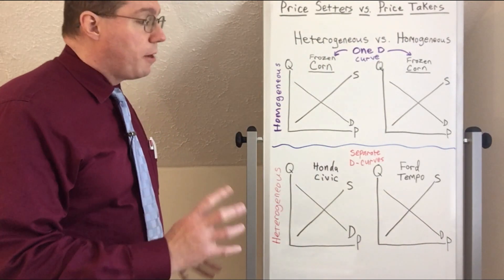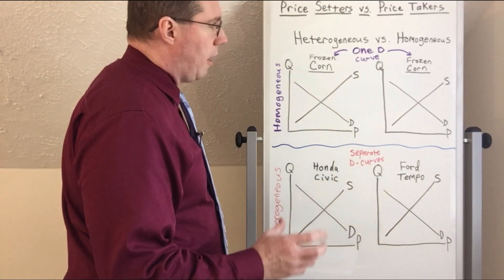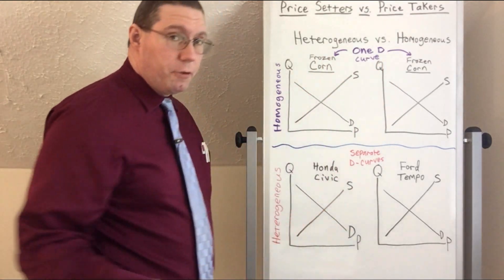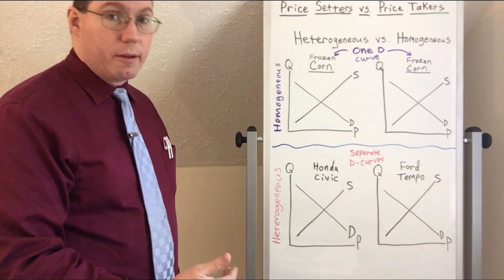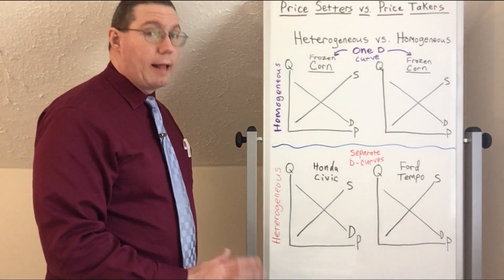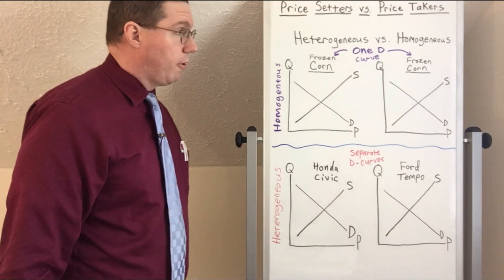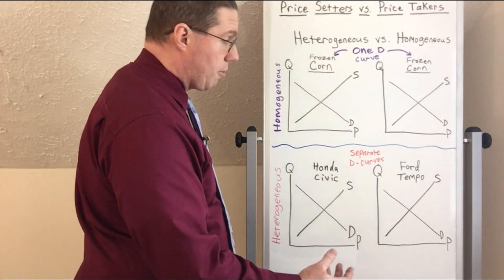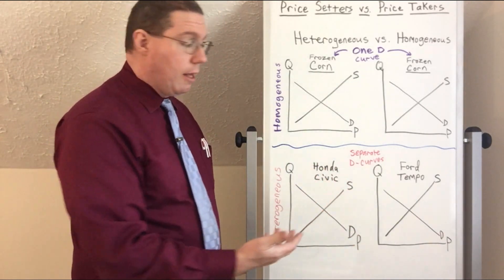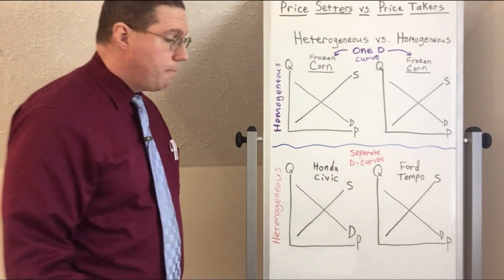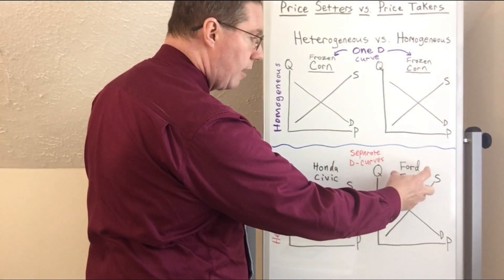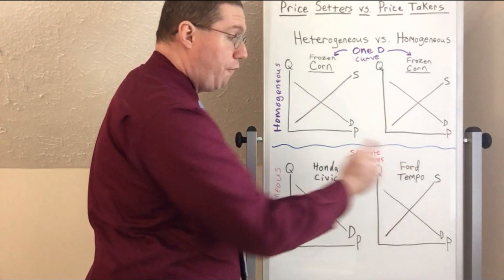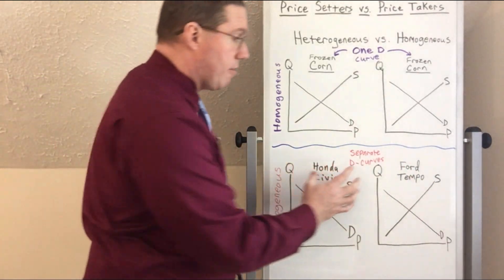We're going to talk about two different kinds of products. Up here we have frozen produce — specifically frozen corn. And the other example is passenger vehicles. You're probably familiar with the Honda Civic, which is a very popular car. Back in the late 1980s and early 1990s, Ford had a model called the Ford Tempo. So we're going to compare the Honda Civic and the Ford Tempo.